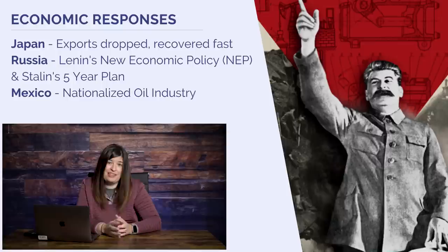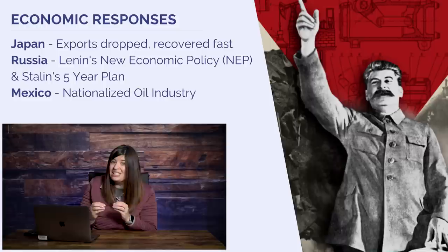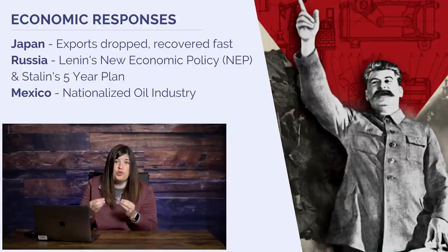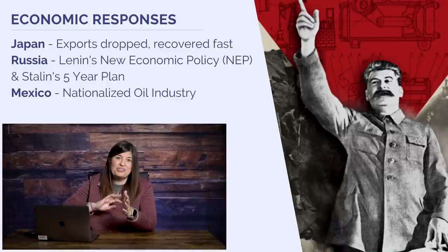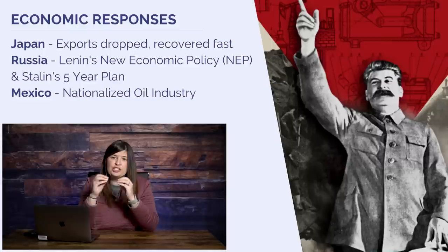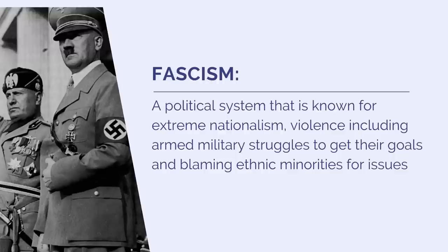Mexico's economy improved from the 1930s through the 1970s as they nationalized their oil industries. This angered foreign investors, but nationalization allowed the Mexican government to benefit from oil revenues rather than foreign investors. Pemex gas stations, the second-largest state-owned oil company in the world, are a result of this. Another factor in this interwar period is the rise of fascism — a political system known for extreme nationalism, violence, armed military struggle, and scapegoating, where ethnic minorities were blamed for the state's problems and became targets.